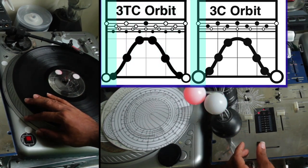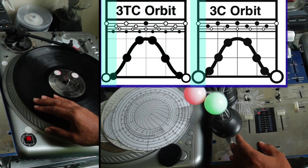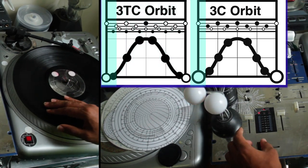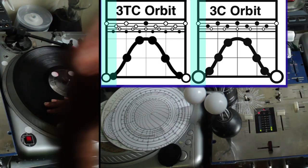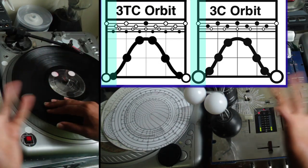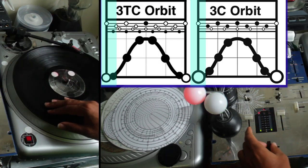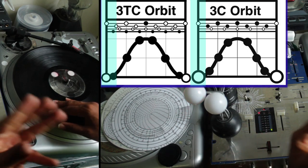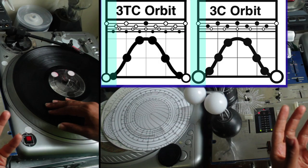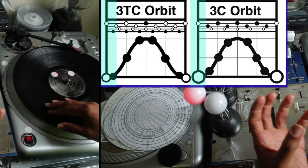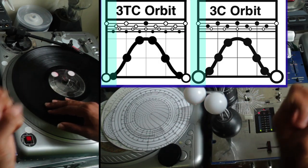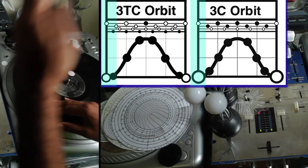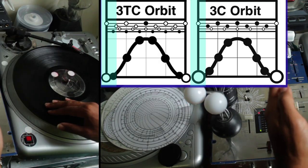Now we're going to do the other style, which goes like this. This is what you'll see me doing in a lot of videos from the past. DJ Ivana has a good version of this one too. This is just a general three-click where the three clicks happen and it bursts, and it chops it up into four, four times.